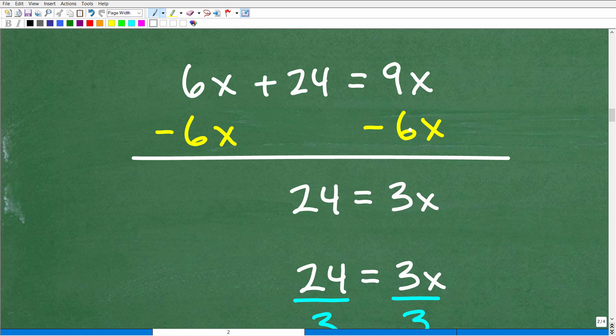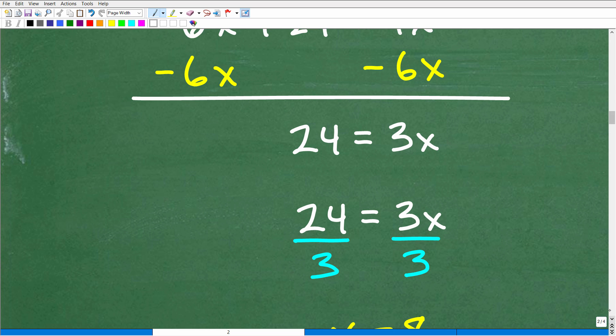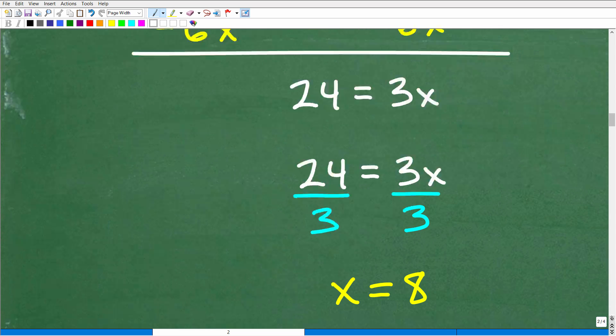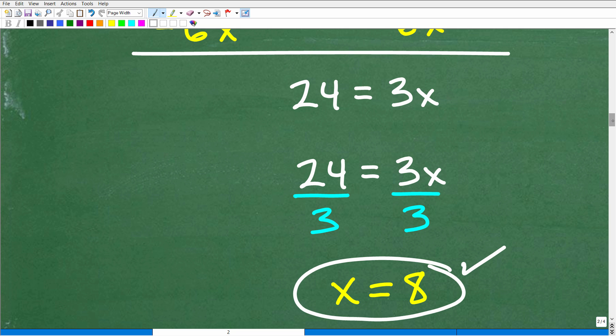So we're going to subtract 6x from both sides, and we end up with our variable term on the right-hand side of the equation. That's perfectly fine. It's just saving us a little bit of work here. So here we have 24 is equal to 3x. So how do we solve for x? Simply divide both sides of the equation by 3. So 24 divided by 3 is 8. x is equal to 8.